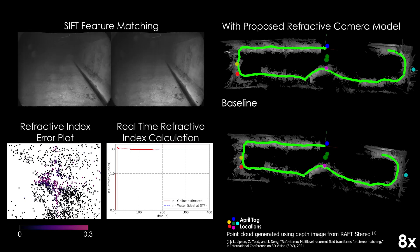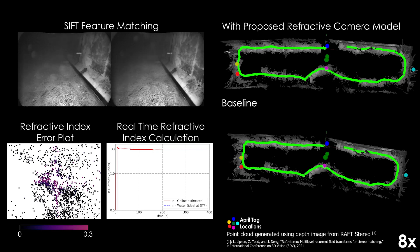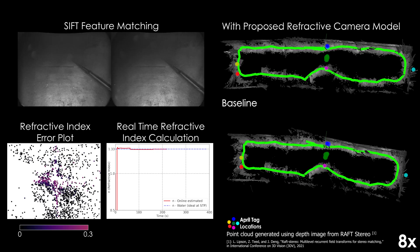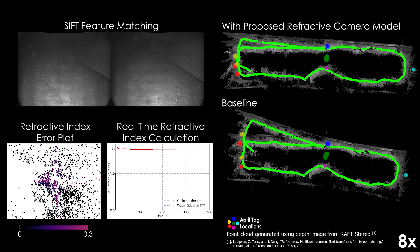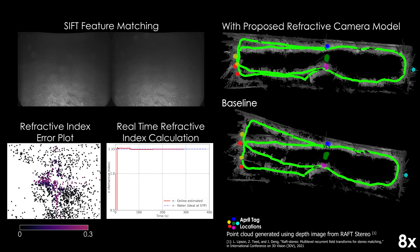The online estimated refractive index over time is compared with ideal value for water. Simultaneously, the error plot shows the deviation from ideal value corresponding to each of the features. To obtain partial ground truth, six April tags were placed in the environment and the difference in their position upon redetection after a loop is used for evaluation.